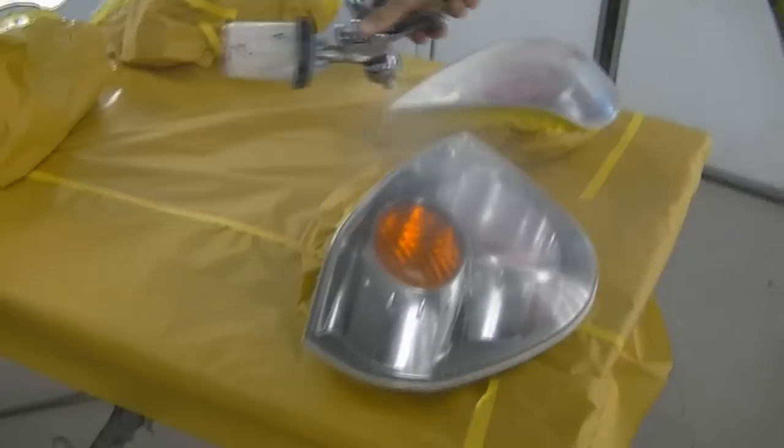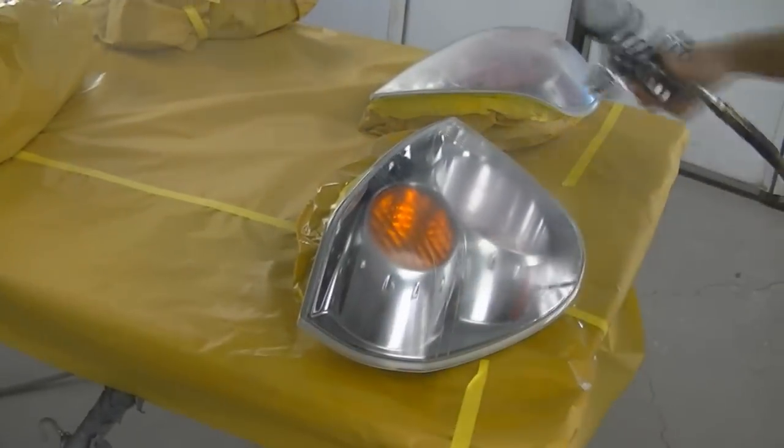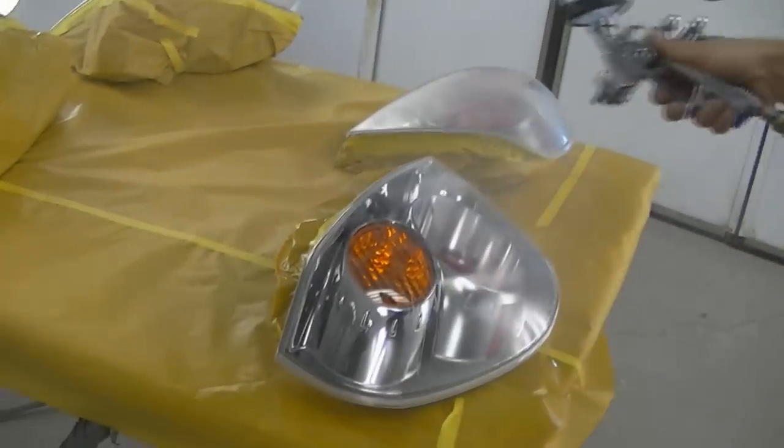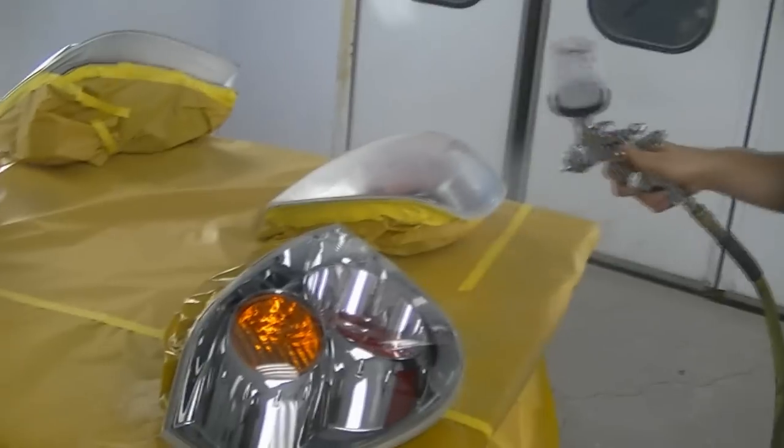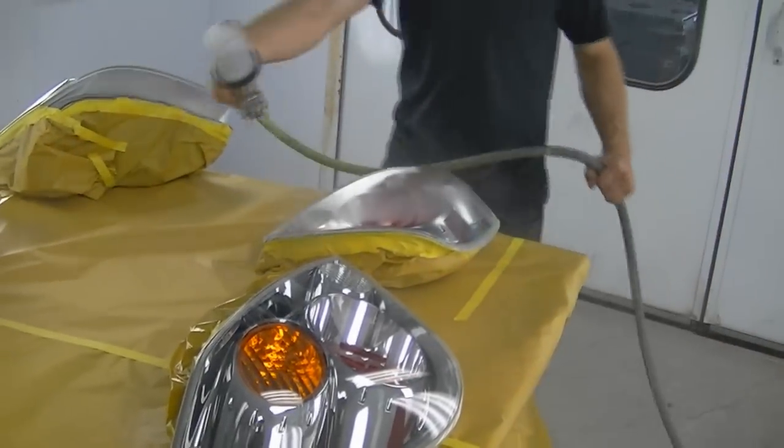Now this will give you an idea of what it would be like if we used an untinted clear and it would just bring the shine back up. If that's what you wanted then you could just use a straight clear. But this primer once it flashes off it will go flat again.